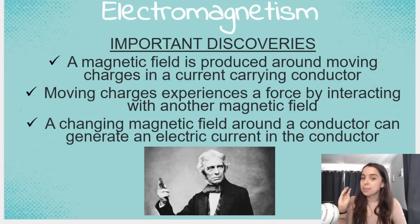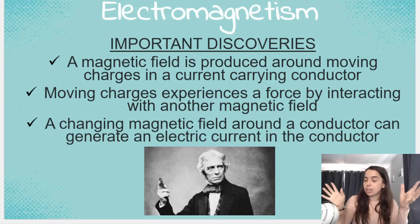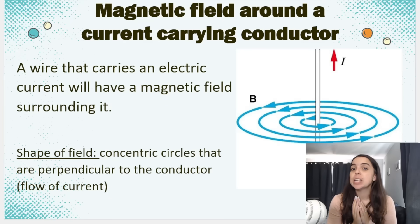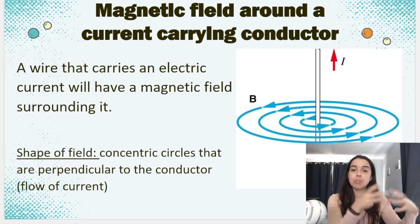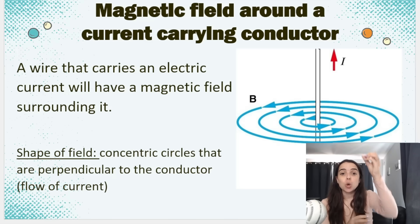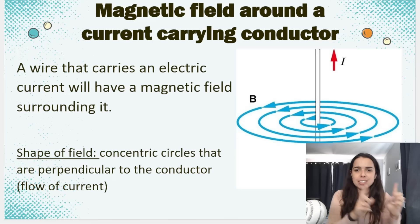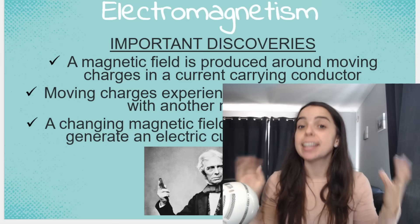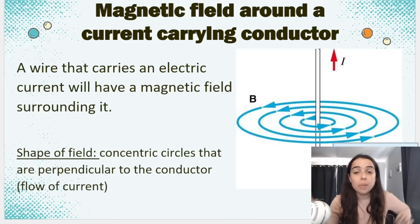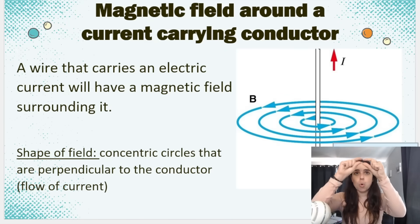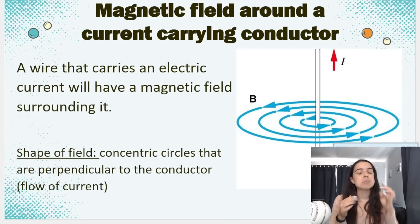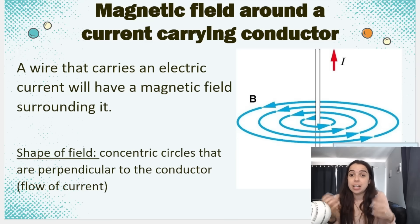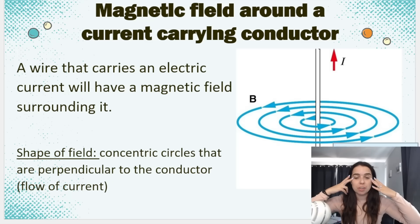These are the important discoveries made around the topic of electromagnetism, and we'll be going through all of these in this and future videos. The first discovery is that if you have a conducting wire carrying an electric current — remember current is the flow of charge — that wire will have a magnetic field surrounding it. So a current-carrying conductor creates its own magnetic field. We cannot see it with our eyes, but as soon as there is current flowing, there is a magnetic field surrounding that conductor.